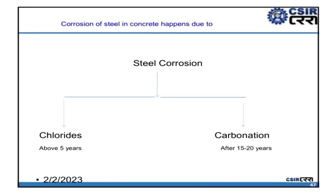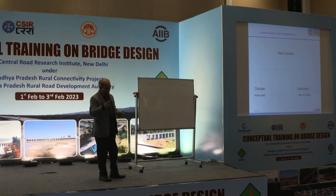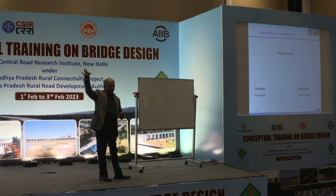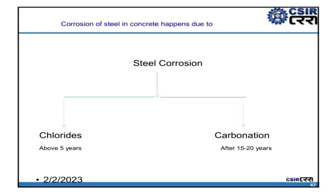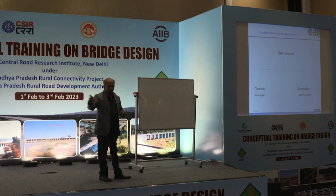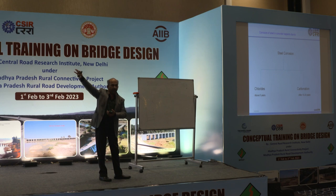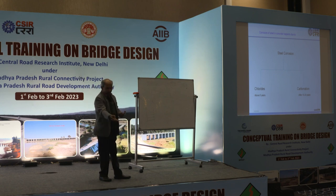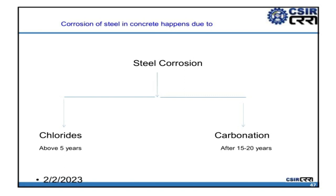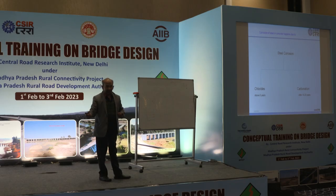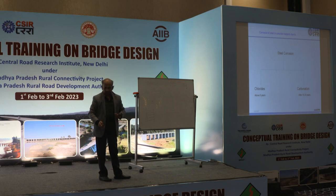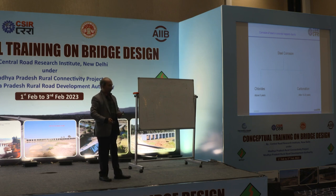Corrosion is triggered by chlorides — from marine environments (Kerala, Tamil Nadu) or contaminated water — or by carbonation in industrial environments where CO2 is released, or in cities where motorized vehicles emit CO2. Even where water from a river is used but an upstream industry is releasing contaminants, that water can cause corrosion. You should always check your water.